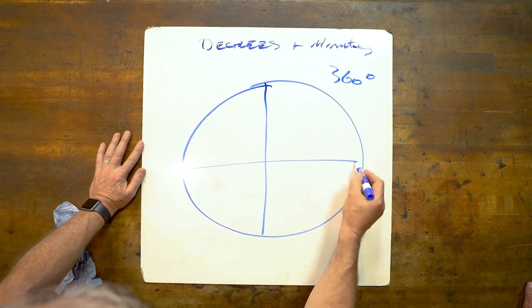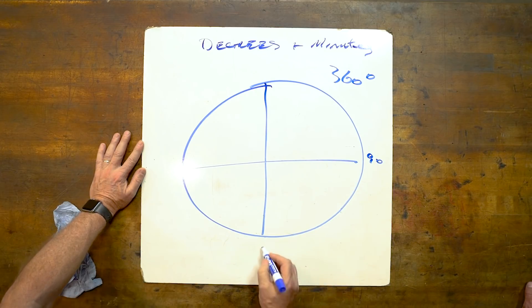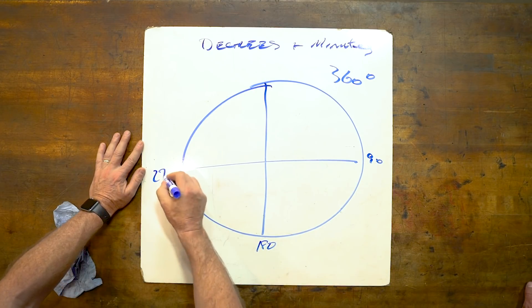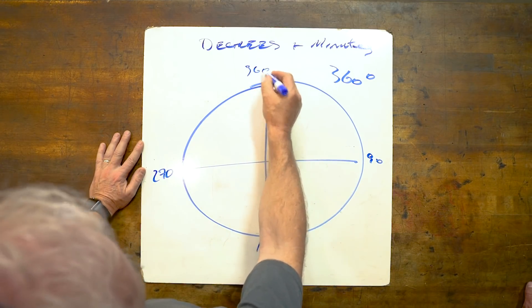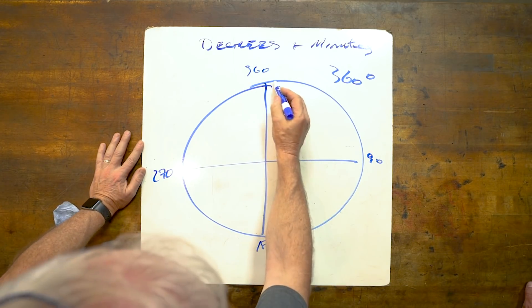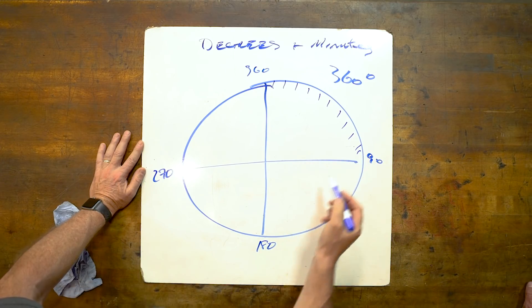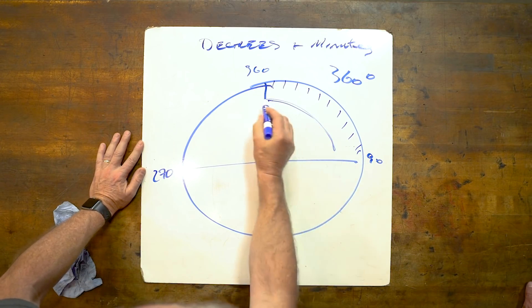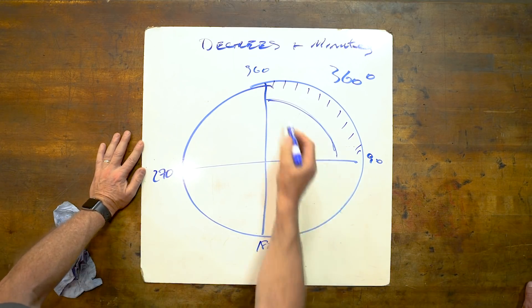If you break it up, 90, 180, 270, 360. Within any one of these, that means there's 90 degrees in this arc here. We all understand 90 degrees.